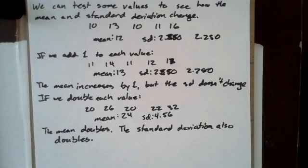If we double each value - 20, 26, 20, 22, 32 - the mean becomes 24, which is twice the original mean, and the standard deviation becomes 4.56, which is also twice the original standard deviation.